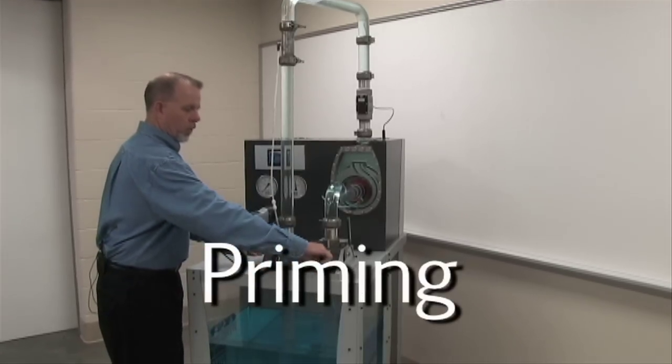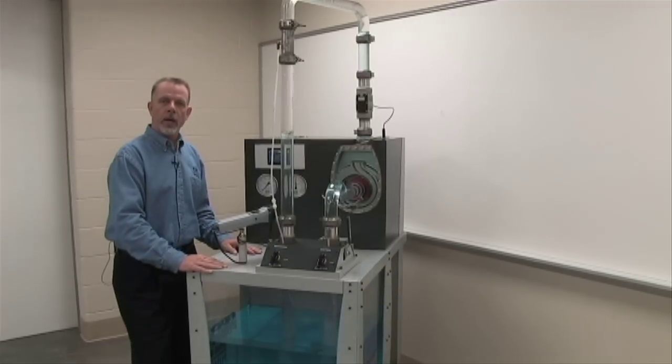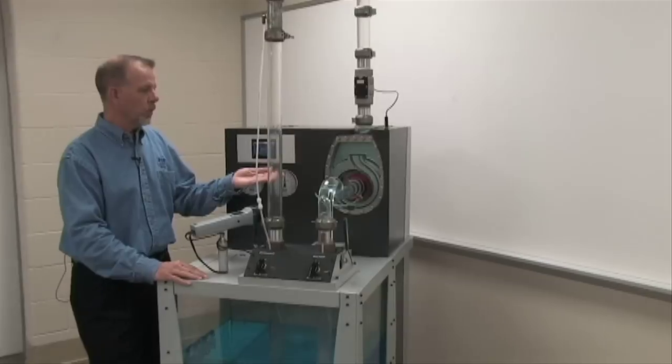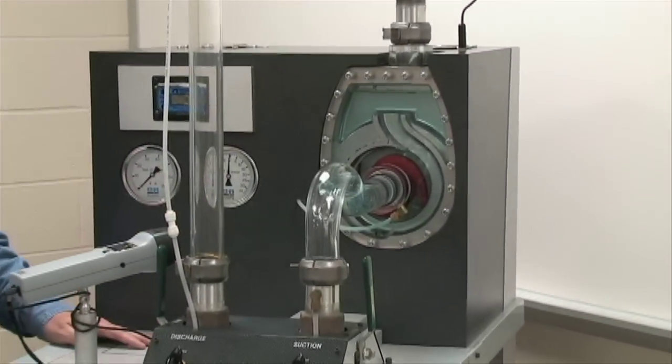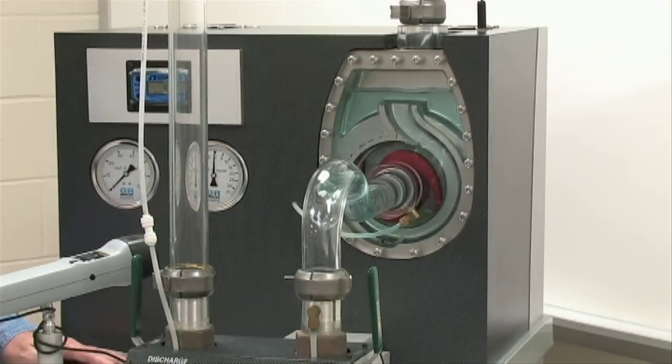We'll open both air valves inducing air back into the system allowing the liquid to fall back to the amount of water that we normally place inside the pump for priming.